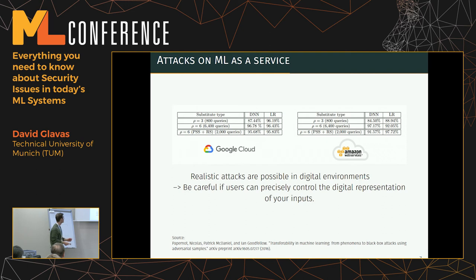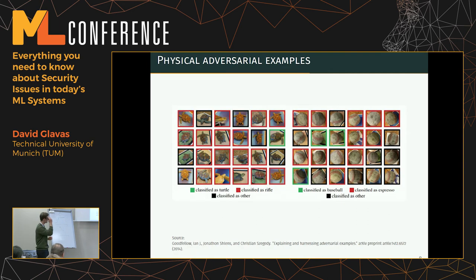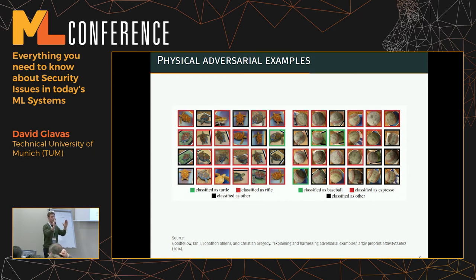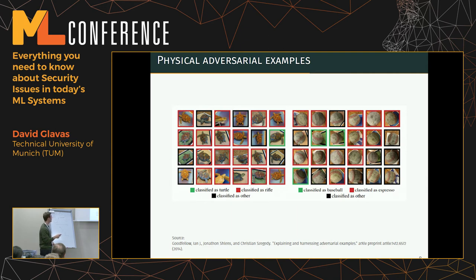The lesson: be careful when users can precisely control the digital representation of inputs. But what if they can't — for example, if the model perceives images through a camera? Researchers managed to print out an adversarial example on paper and it still fooled a state-of-the-art image classifier. They also 3D-printed objects — for example a turtle that was misclassified as a rifle across all sampled frames.